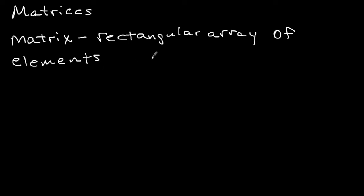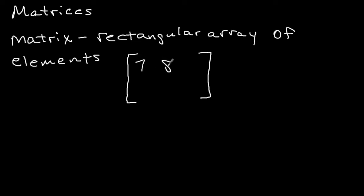What this means is you're going to have a box with brackets — sometimes it has parentheses, but this one has brackets. This matrix is going to have two rows and two columns. The first row is going to be seven, eight, nine, and the second row is going to be one, two, three. So given this matrix, we know that it has two rows but also three columns.